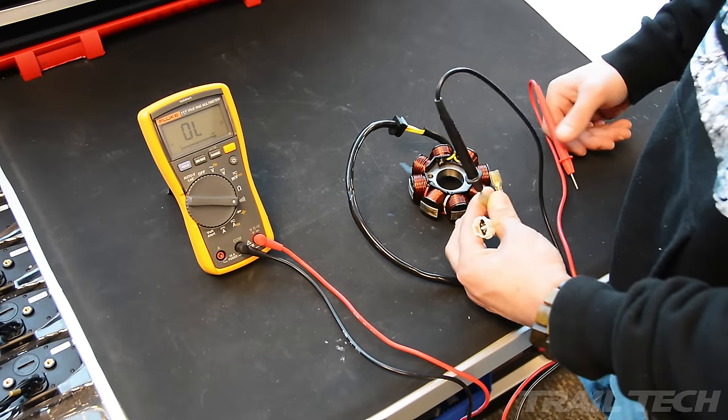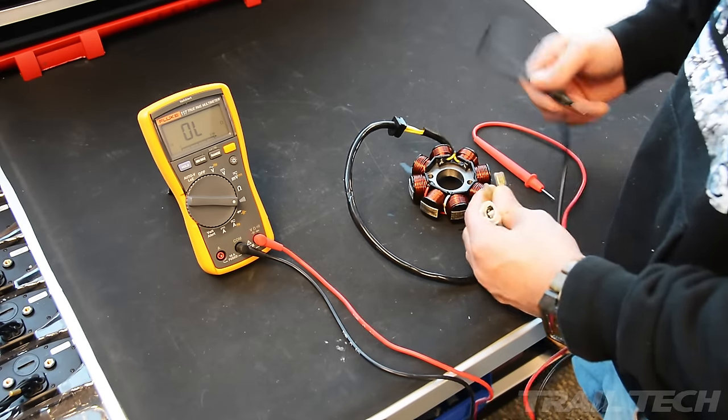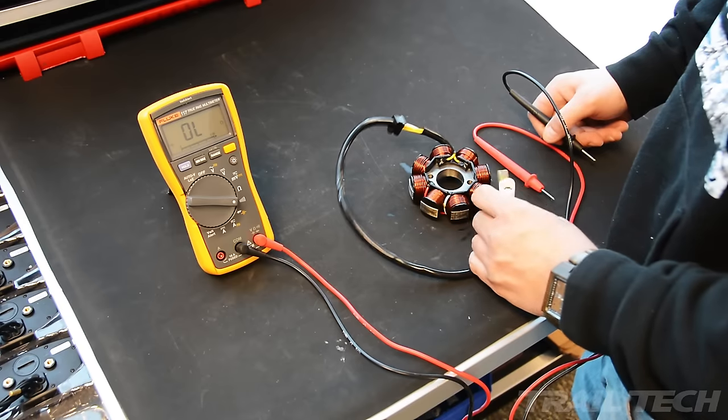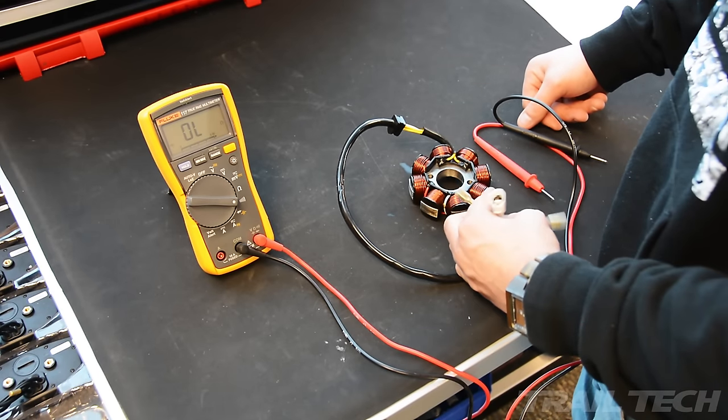You can do this against the frame with any other wire on the bike as well. If you hear a beeping noise, then there's a wire that's frayed and is shorting out to the frame.